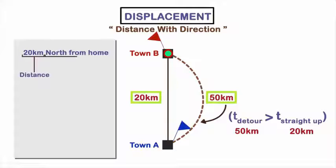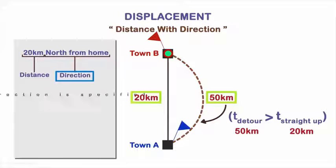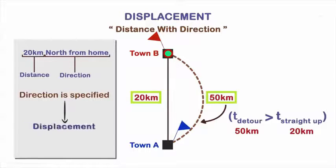You traveled 20 kilometers north, north shows the direction, and because direction is specified, displacement becomes a vector quantity.